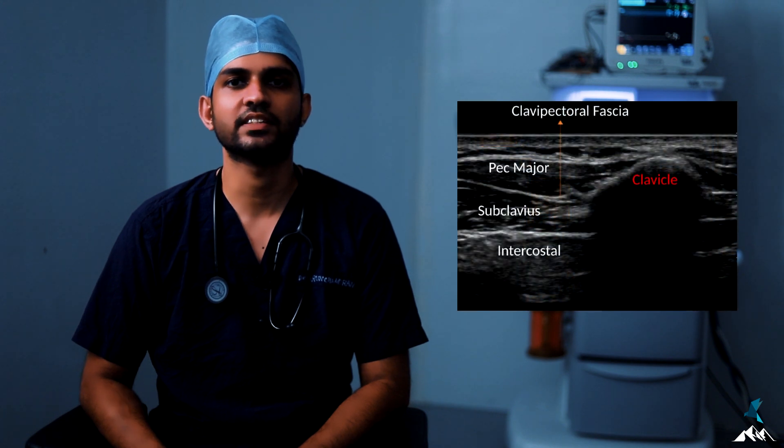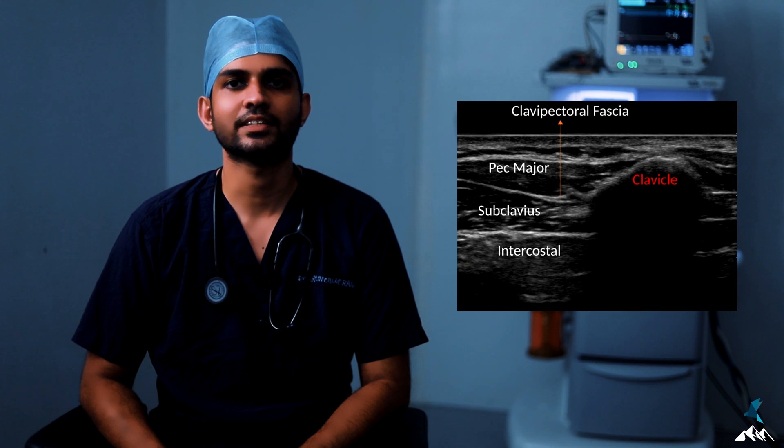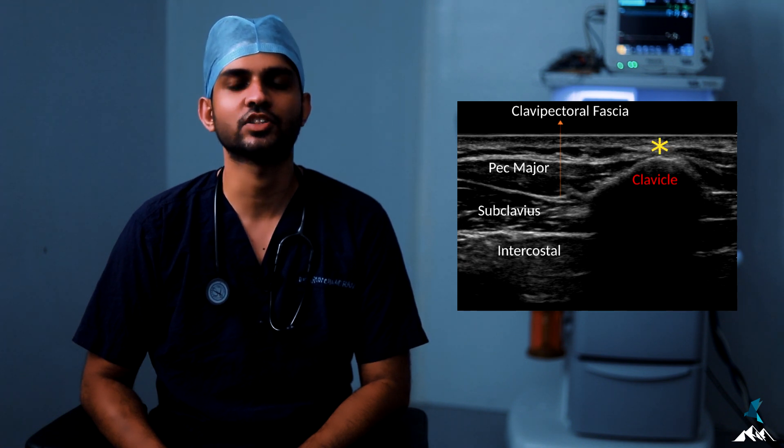For the technique of the clavipectoral fascia block, only the ultrasound-guided technique is currently described in literature. The block is performed with the patient in the supine position. The operator stands on the right side of the patient for either side, with the ultrasound machine on the left side or at the head end — whichever ergonomics is comfortable. A high-frequency linear probe is used, starting from the medial end of the clavicle in the parasagittal plane. The probe is centered over the body of the clavicle. We identify the clavicle with its acoustic shadow, the subclavius muscle, and the superficial pectoralis major. The local anaesthetic is injected just above the anterior surface of the clavicle.